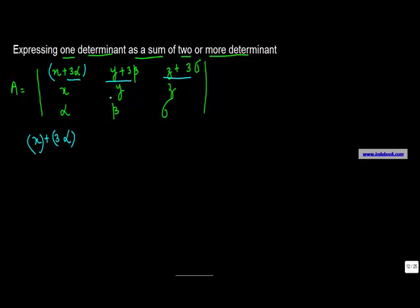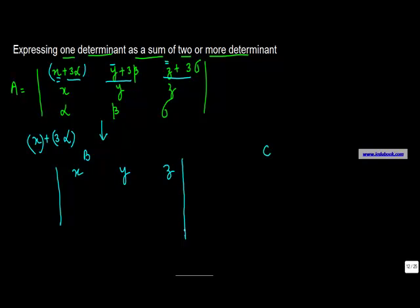In such a case, what you can always do — and the other two rows we are not talking about them — is express this first determinant A as a sum of two determinants, let's call them B and C. B is equal to the first part of all three variables, so basically x, y, and z. In the second determinant, you put in the second variable, so you put in 3 alpha, 3 beta, and so on. You can express A as a sum of these two.